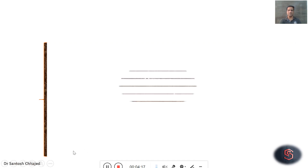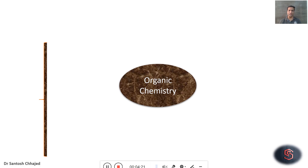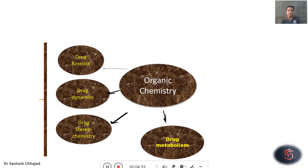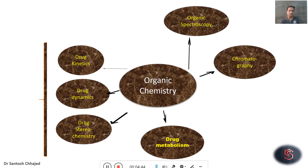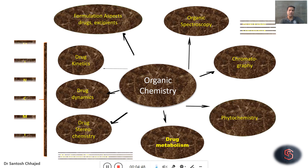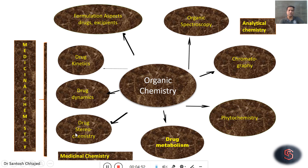I will discuss a few specialized branches where understanding of organic chemistry is very important. These branches are highly specialized and they are the heart of most of the industries where we come across chemicals. Terms like drug kinetics, drug dynamics, drug stereochemistry, drug metabolism — we frequently hear these. These are parts of the specialized subjects that are medicinal chemistry and pharmacology. These concepts about the drug — their kinetics means absorption, distribution, and drug dynamics means how a drug binds with its target proteins or target receptor in the body.